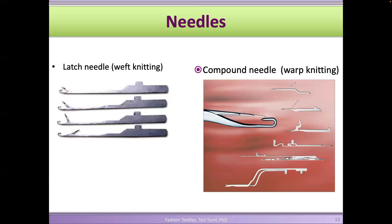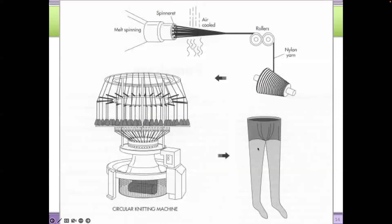On a knitting machine we have latch needles — they have a latch, and the hook holds the yarn while it goes up and down. On a circular knitting machine, there's one latch needle at every position around the circle. These needles stand upward around the circle, and each one gets one yarn. When looping is being done, each needle raises up and goes down making a loop, going all the way around the knitting machine constantly to make the knit fabric.